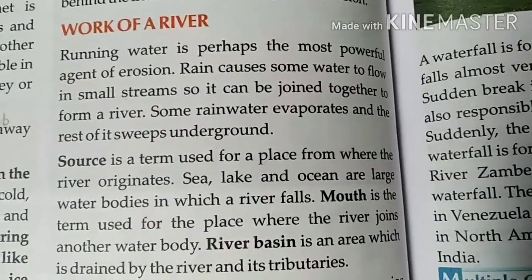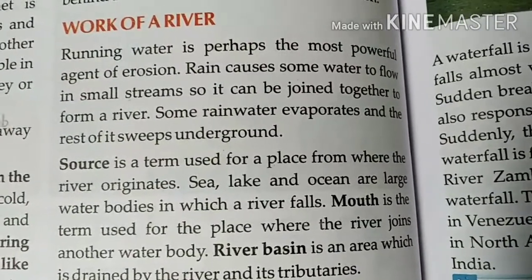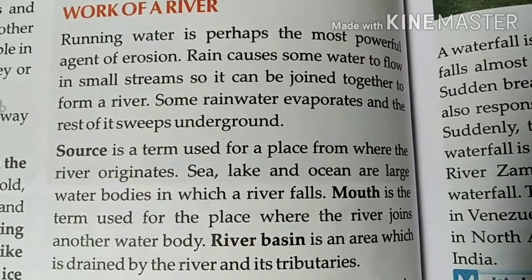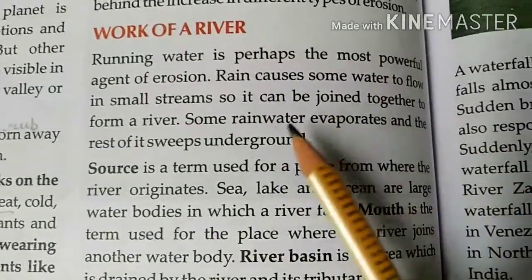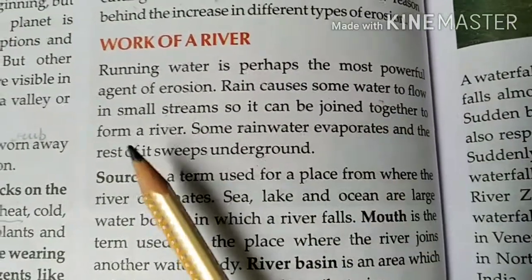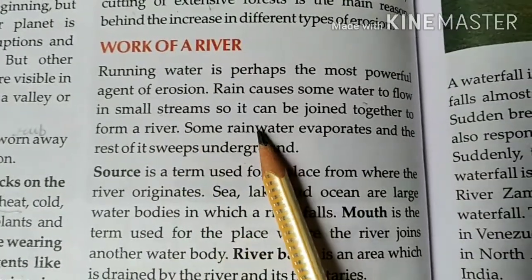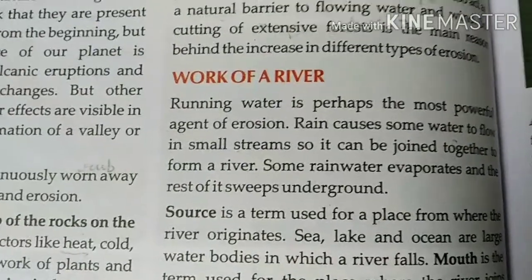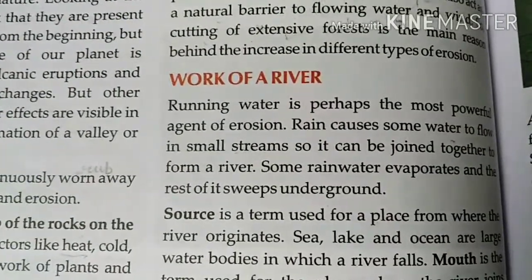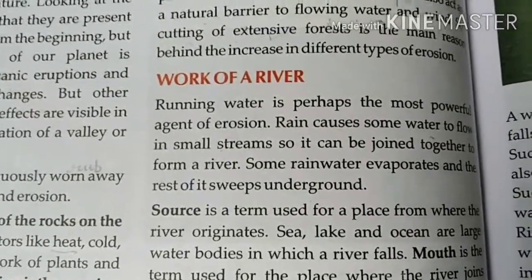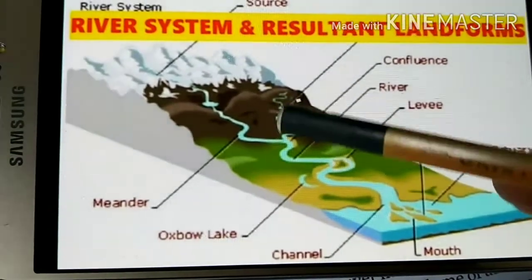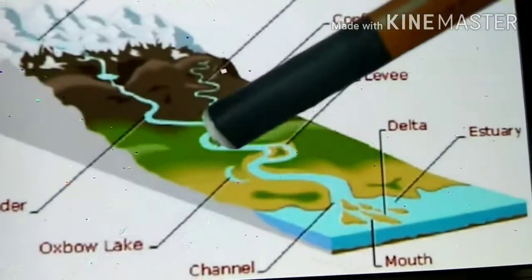Running water is perhaps the most powerful agent of erosion. When rain falls, it causes water to flow in small streams. When rainwater flows in small streams, it eventually turns into a big stream and then a big river, and that is when erosion begins. You can see in the diagram that streams flow down from the mountains and generate one river.